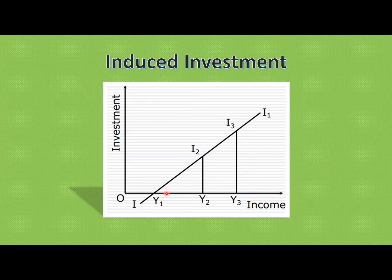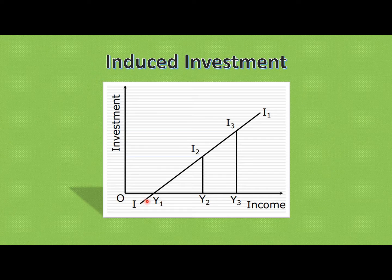When national income is at a certain level and income is less than expected, there is no desire to make further investment. In this case, if you have current capital goods, you will have higher depreciation. Net investment equals gross investment minus depreciation. If depreciation exceeds gross investment, then net investment becomes negative. This is how net investment can be negative at low income levels.